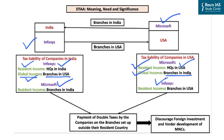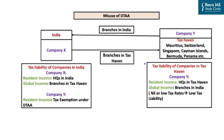To avoid MNCs being taxed doubly, countries sign double taxation avoidance agreements, under which payment of double taxes on branches set up outside the resident country is avoided. Such treaties are intended to make a country an attractive investment destination by providing relief on dual taxation—exempting income earned abroad from tax in the resident country. However, the real issue is the misuse of DTAA agreements by multinational companies for tax avoidance or tax evasion.